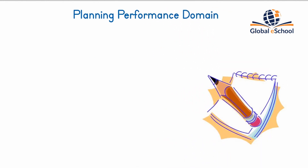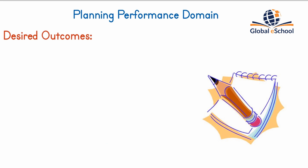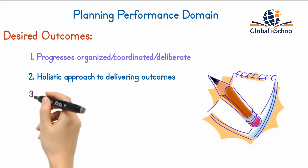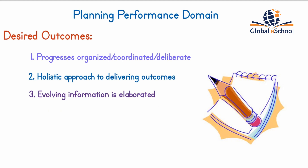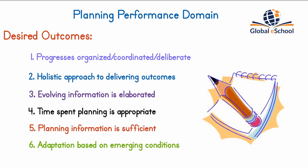The planning performance domain addresses activities and functions associated with the initial, ongoing, and evolving organization and coordination necessary for delivering project deliverables and outcomes. Effective execution results in: the project progressing in an organized, coordinated, and deliberate manner; a holistic approach to delivering project outcomes; evolving information elaborated to produce deliverables; time spent planning appropriate for the situation; planning information sufficient to manage stakeholder expectations; and a process for adapting plans based on emerging and changing needs or conditions.